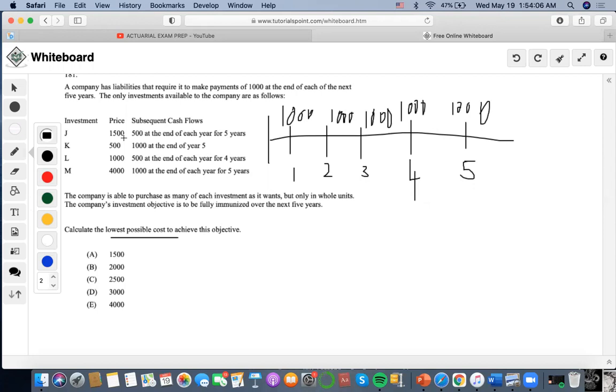One of the options is a price of 1500 to finance 500 at the end of each year for five years.